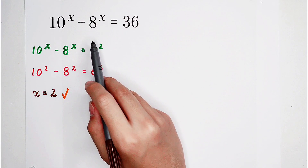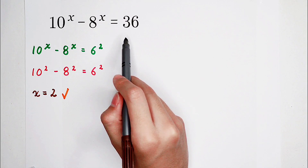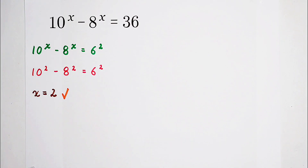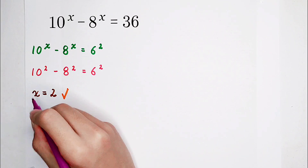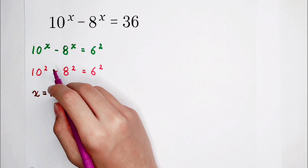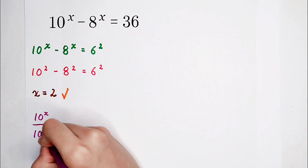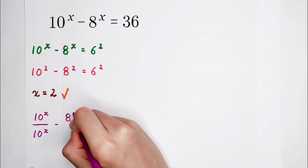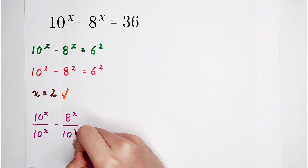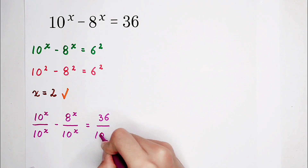Starting with 10 to the power of x minus 8 to the power of x equals 36. For this kind of equation, our first step is to divide both sides by 10 to the power of x. Let's try dividing both sides by 10 to the power of x: we get 10^x divided by 10^x, minus 8^x divided by 10^x, equals 36 divided by 10^x.